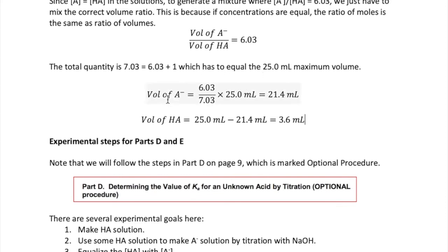we can calculate the volume of each species by doing the calculation shown here. For A minus, it will be 6.03 out of 7.03 times 25 milliliters, which gives us 21.4 milliliters. For HA, it's the remainder, which is 3.6 milliliters.